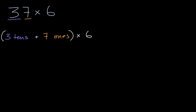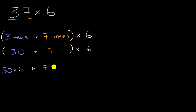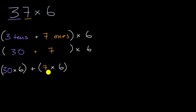Another way you could think about this: this is the same thing as 30 plus seven, times six. You could call it the distributive property if you like, but I want you to think about why it's intuitive. If I have 37 sixes, that's the same thing as 30 sixes plus seven sixes. 37 of something equals 30 of that something plus seven of that something. So 37 times six is 30 times six plus seven times six.